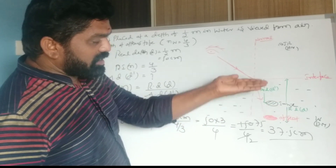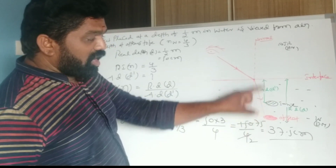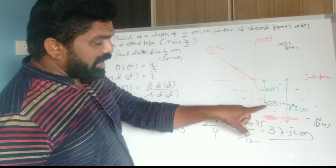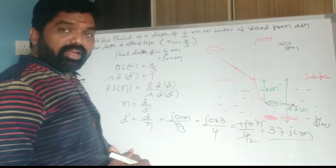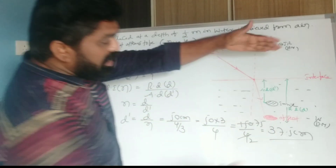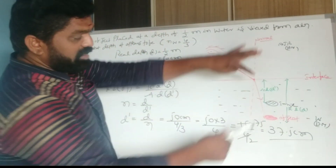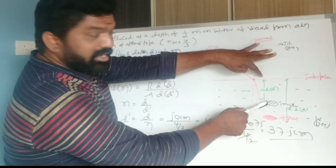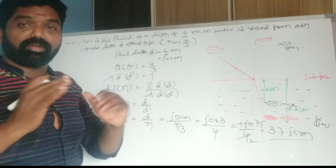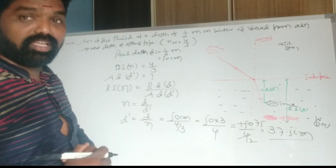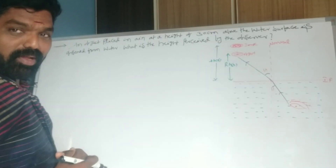So the image appears above the surface of the original object. The real depth is 50 centimeters, and the apparent depth is 37.5 centimeters.